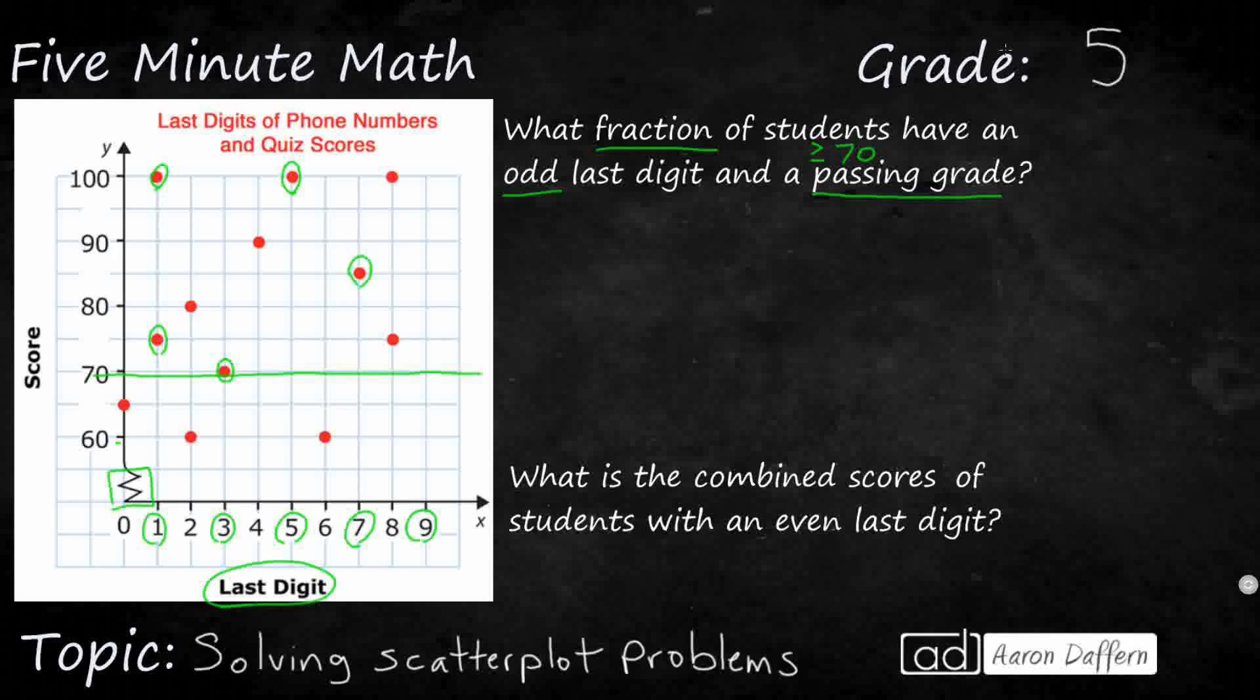And then two 8s we're going to exclude, and there's no 9s. So our fraction has a numerator and denominator. The numerator is going to be the number of students that meet the criteria. So that's odd and greater than or equal to 70. So how many did we circle that met the criteria? 1, 2, 3, 4, 5.